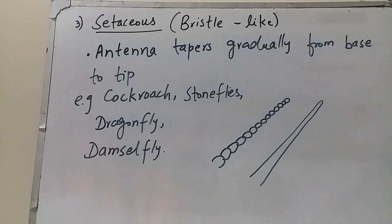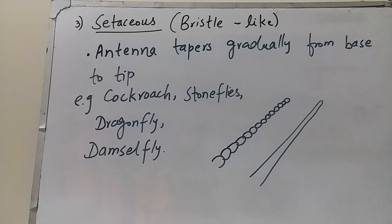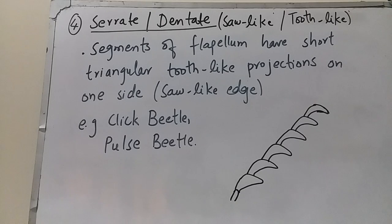The third type is setaceous antenna, which means bristle-like. It tapers gradually from base to tip — the proximal segments are larger in size and the terminal segments become smaller. Setaceous antennae are found in cockroaches, stoneflies, dragonflies, and damselflies.